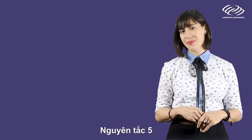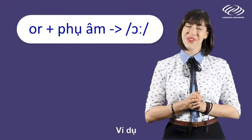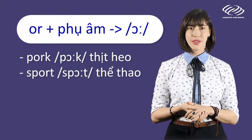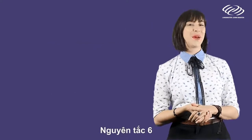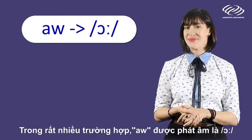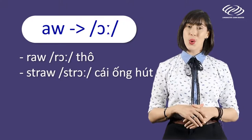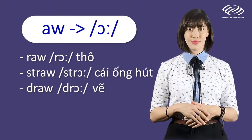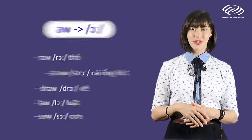And number five: O-R is pronounced as OR when it comes before most consonants. For example: hawk, sport, corn. And number six: the letters A-W are pronounced as O in many cases. For example: raw, straw, draw, law, saw.